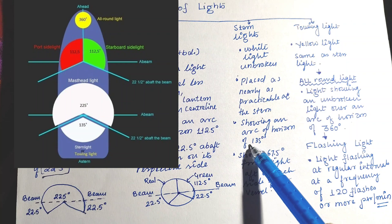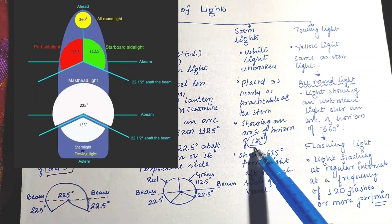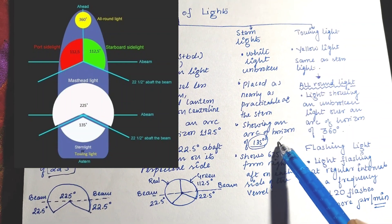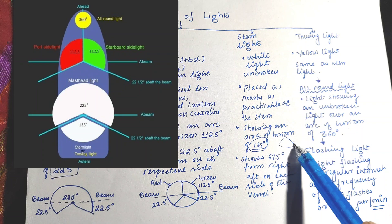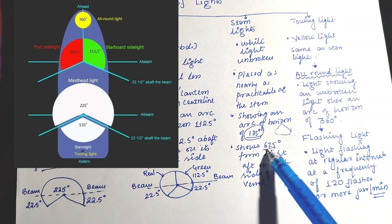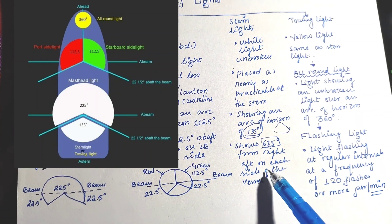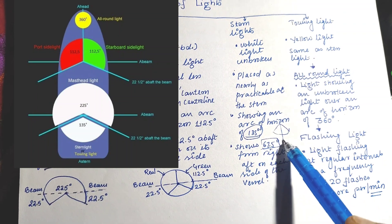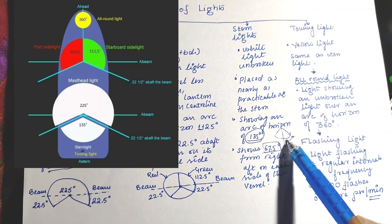This 135 degree arc shows 67.5 degrees from right aft on each side, so this angle will be 67.5 degrees.